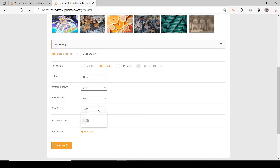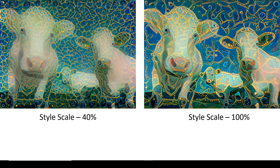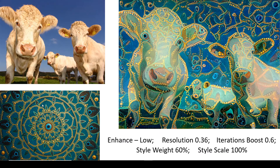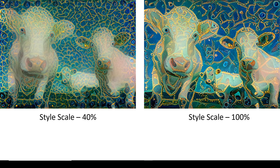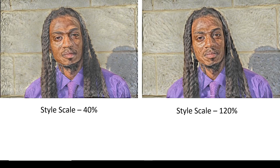Next is style scale, which goes from 40% to 120%. Style scale is kind of like how big your paintbrush is — how zoomed in or zoomed out the style is. Are we going to make the style shapes big on the image, or small? At style scale 100%, the style is pretty large. At style scale 40%, the style is small — you get tiny Van Gogh strokes along the edges, whereas at 100% you get large Van Gogh strokes.